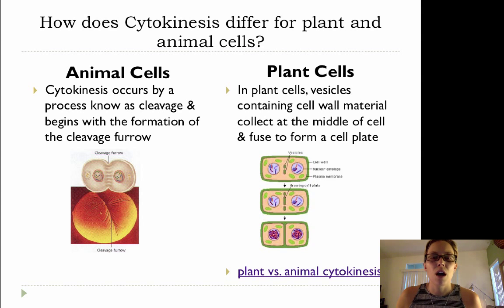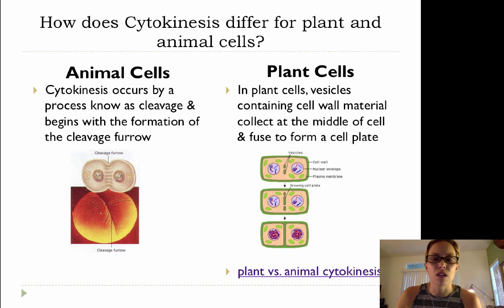Picture a membrane sort of pinching in, and then once that membrane has pinched in completely, those two cells are going to divide, and you'll have two genetically identical diploid cells.